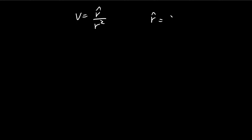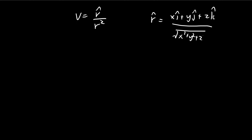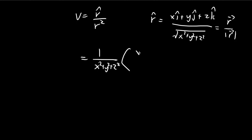So r-hat is just equal to x·i plus y·j plus z·k divided by the magnitude: square root of x squared plus y squared plus z squared. This is just the vector for whatever point you're at divided by its magnitude. And you can see that r squared is just x squared plus y squared plus z squared.